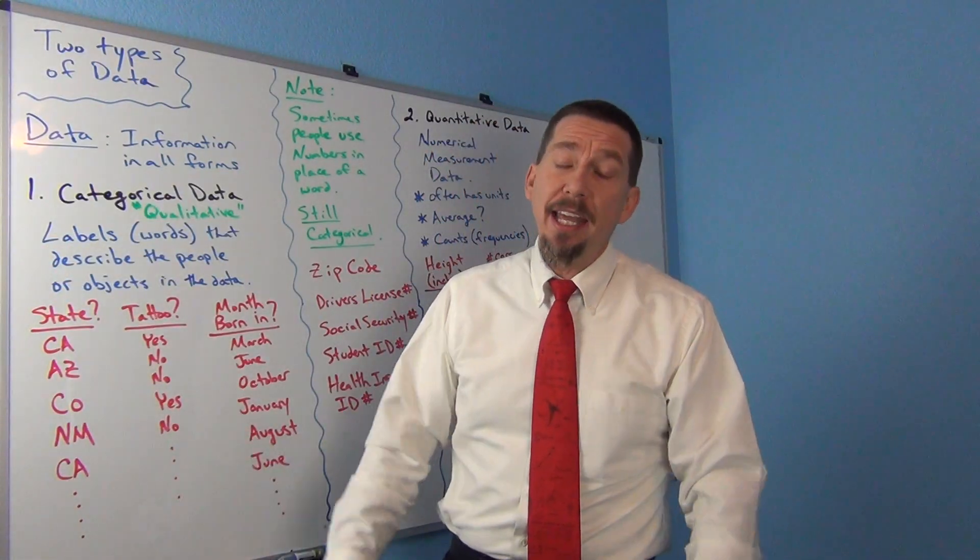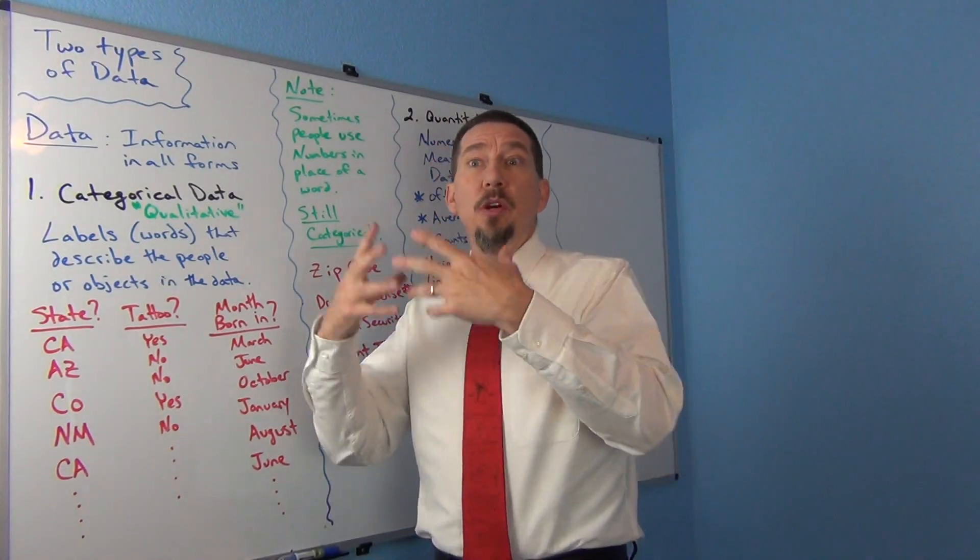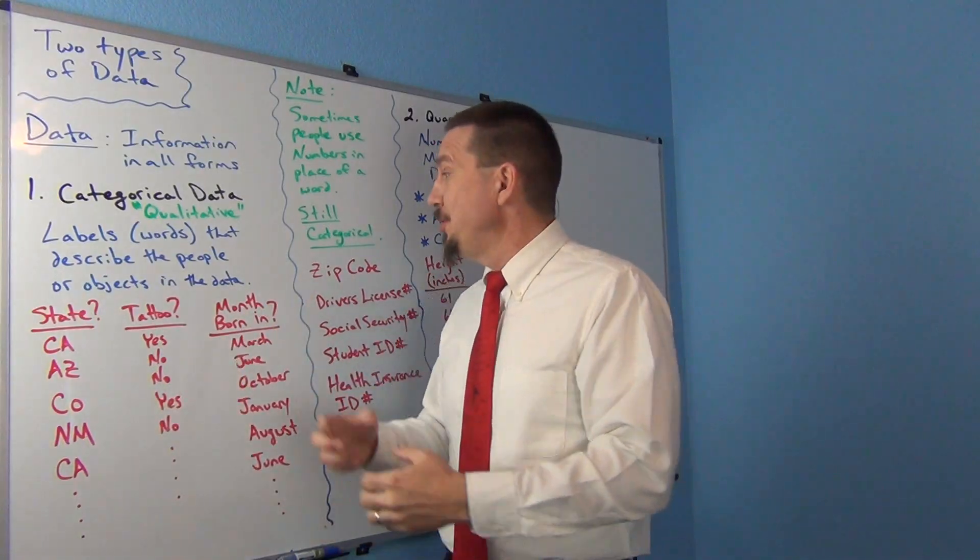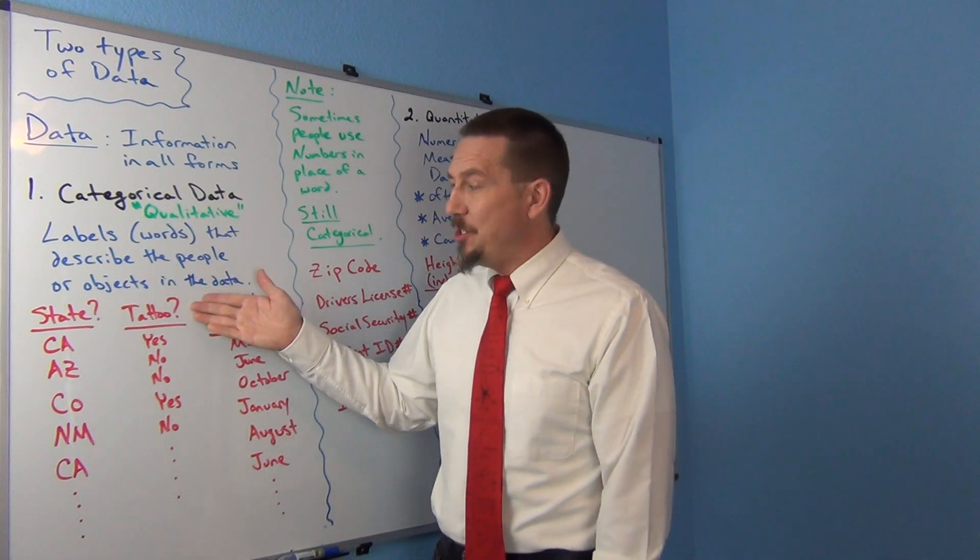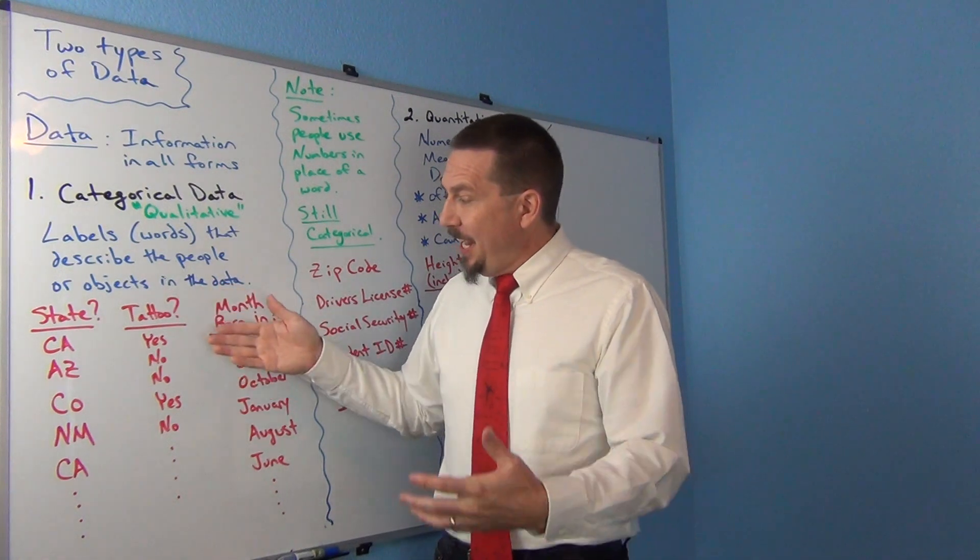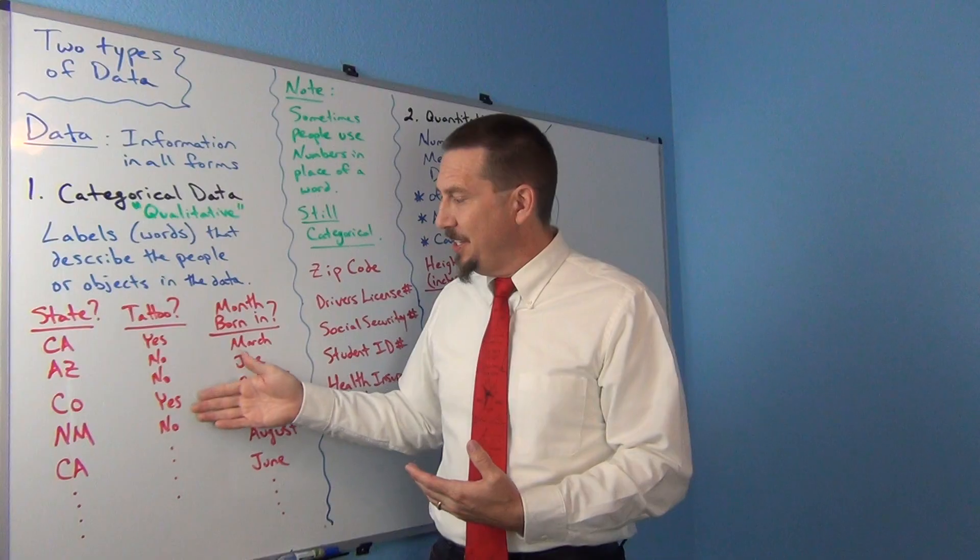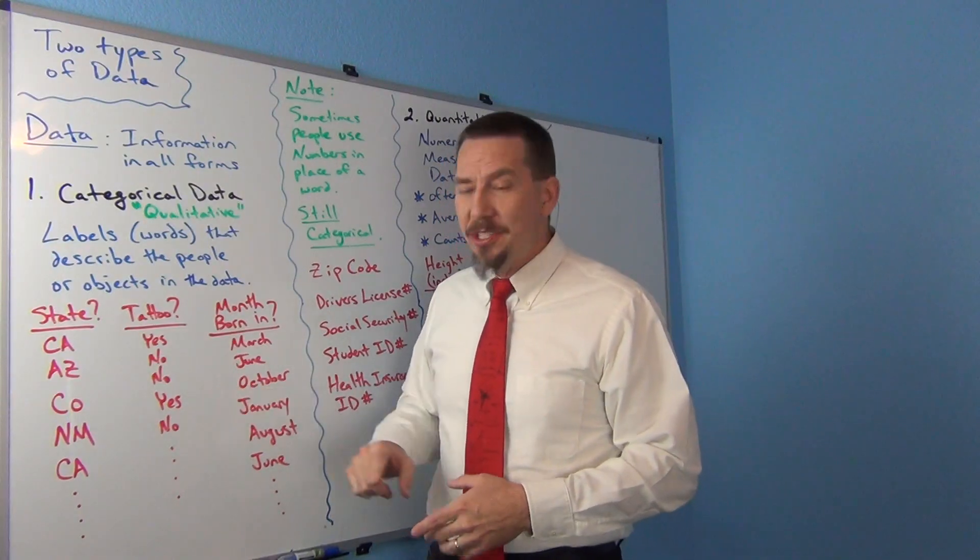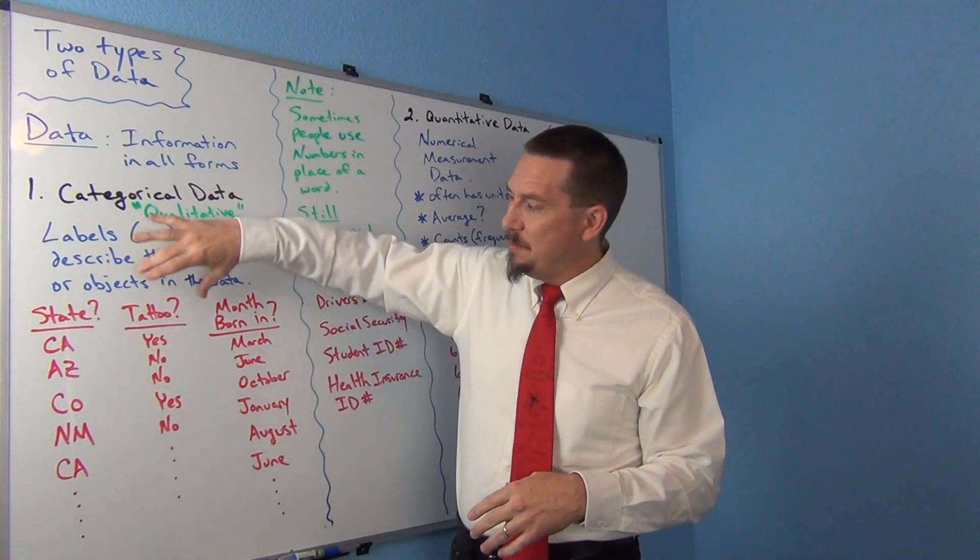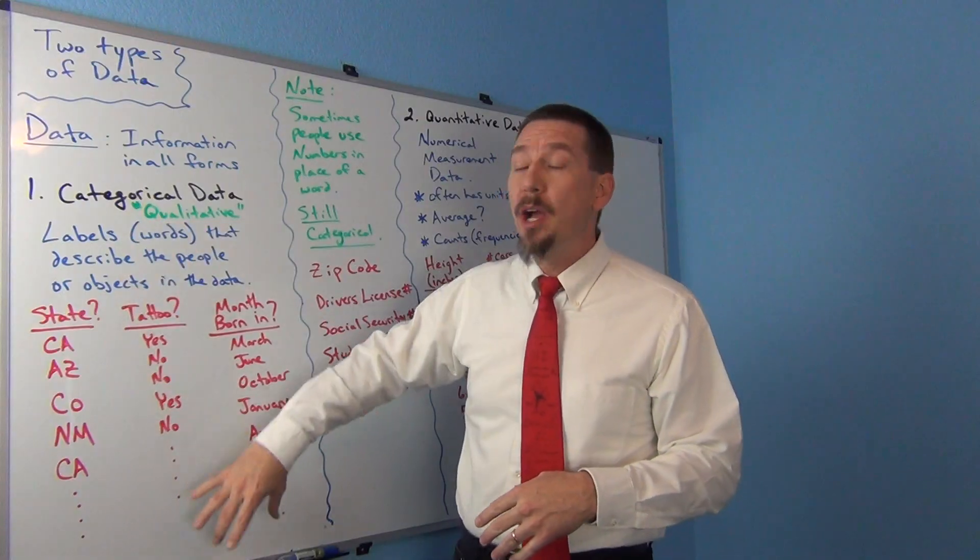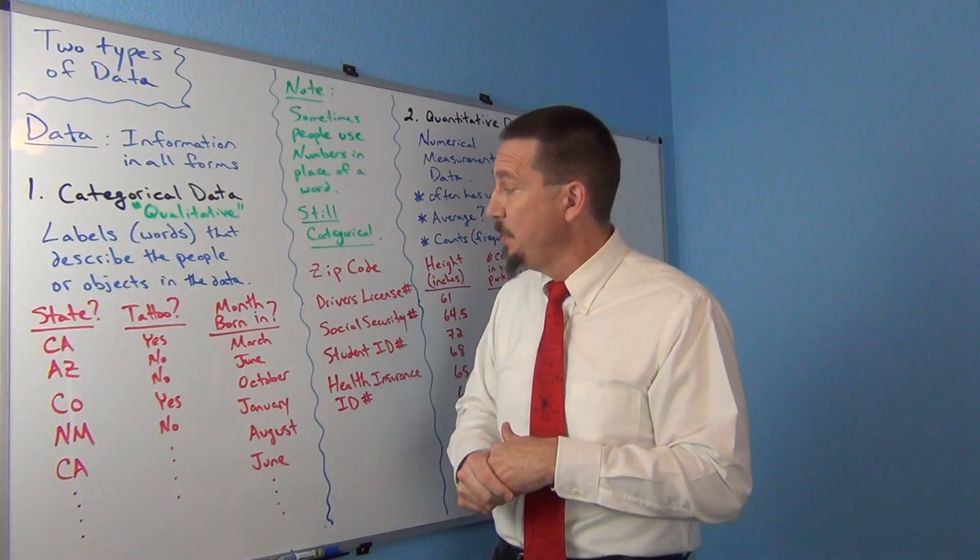Notice the data set's really made up of words or descriptions, something that you're describing about the person. A very common categorical question is something that involves yes or no. Like, do you smoke cigarettes? Yes or no? Do you have at least one tattoo? Yes or no? So notice the data set, again, is made up of words. That's categorical data.